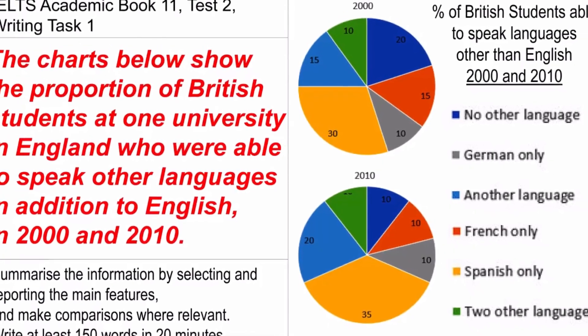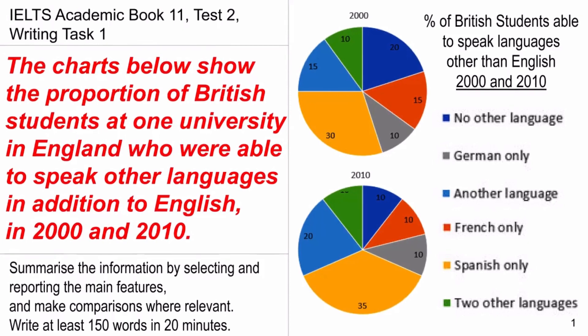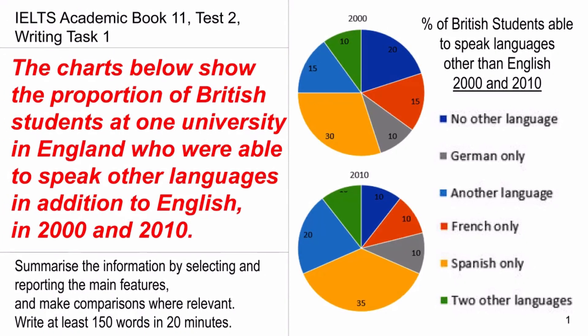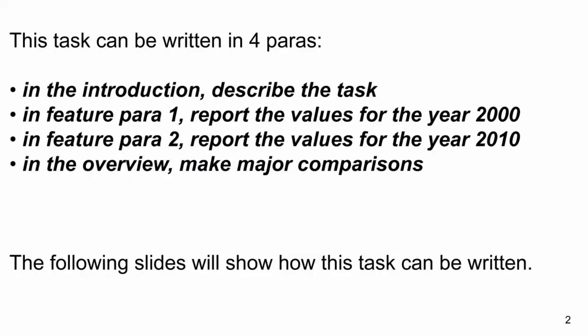Today we are going to discuss the IELTS Academic Book 11 Test 2, Writing Task 1. The charts below show the proportion of British students at one university in England who were able to speak other languages in addition to English in 2000 and 2010. This task can be written in four paragraphs: an introduction, Feature Para 1 for year 2000 values, Feature Para 2 for year 2010 values, and an overview for major comparisons.